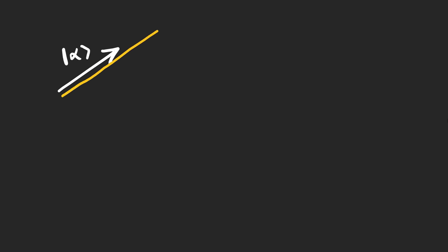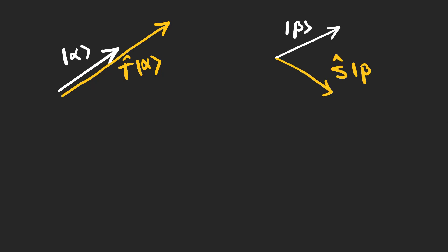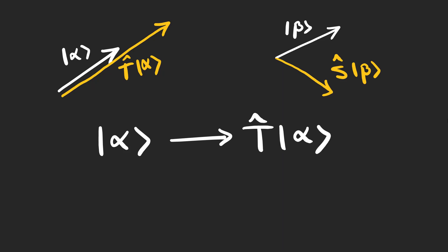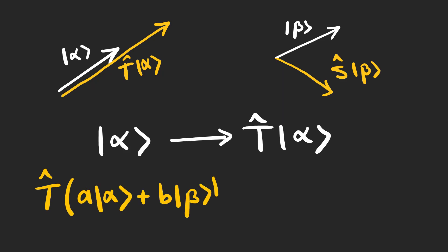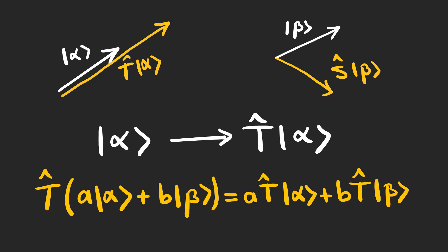Suppose we have a vector alpha and want to transform it to another vector with a different length, or a vector beta that we want to rotate. These are examples of linear transformations, by which we take a vector in our vector space and transform it into some other vector. It's important that this transformation be linear, meaning that performing it on a combination of vectors is the same as acting on each vector individually and summing the transformed vectors without changing the coefficients.